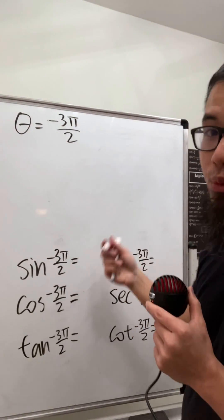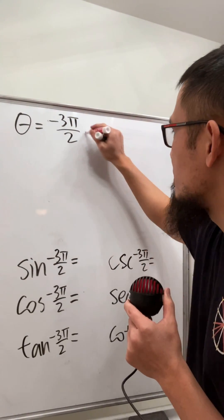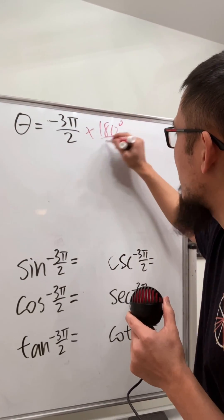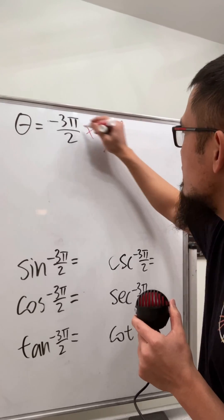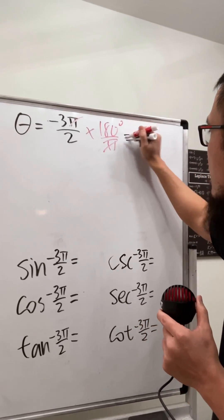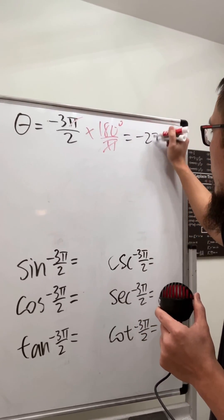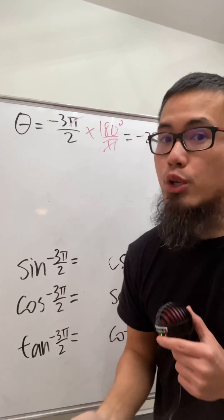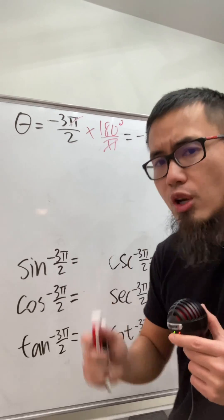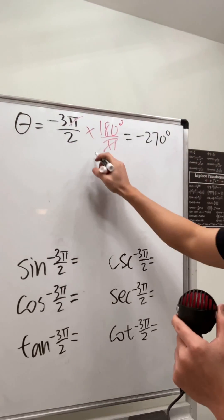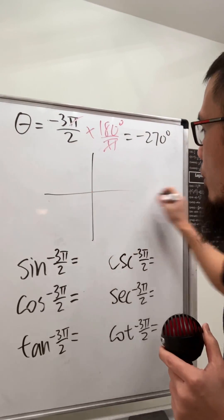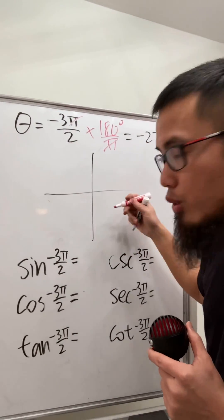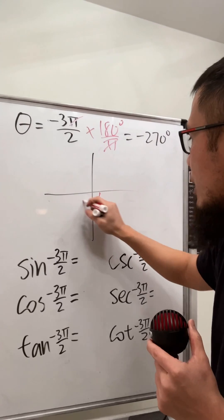The next angle is -3π/2. Multiplying by 180°/π, this equals -270°, which is a quadrantal angle. Since it's a negative angle, we go clockwise on the unit circle.